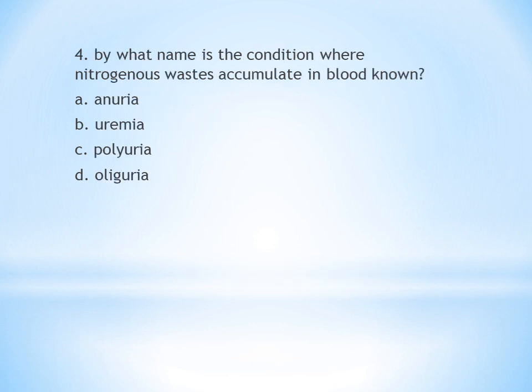Fourth question: By what name is the condition where nitrogenous waste accumulates in blood known? A. Anuria — absence of urine, B. Uremia — nitrogenous waste accumulates in blood, C. Polyuria — increased urination, D. Oliguria — scanty urination. The answer is B, uremia.